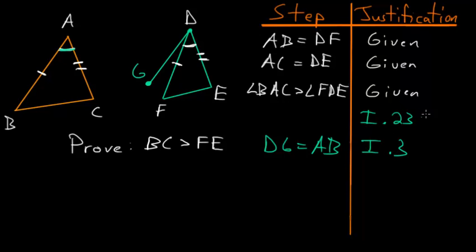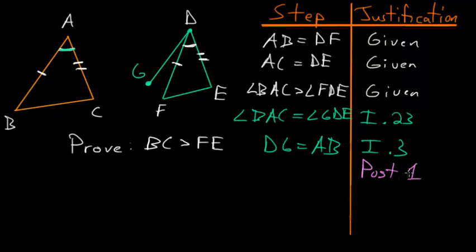With this construction we have that angle BAC equals angle GDE. Now we can use Postulate 1, which says we can create a line between any two points, so let's draw lines between G and E, and G and F — constructing line GE and line GF.